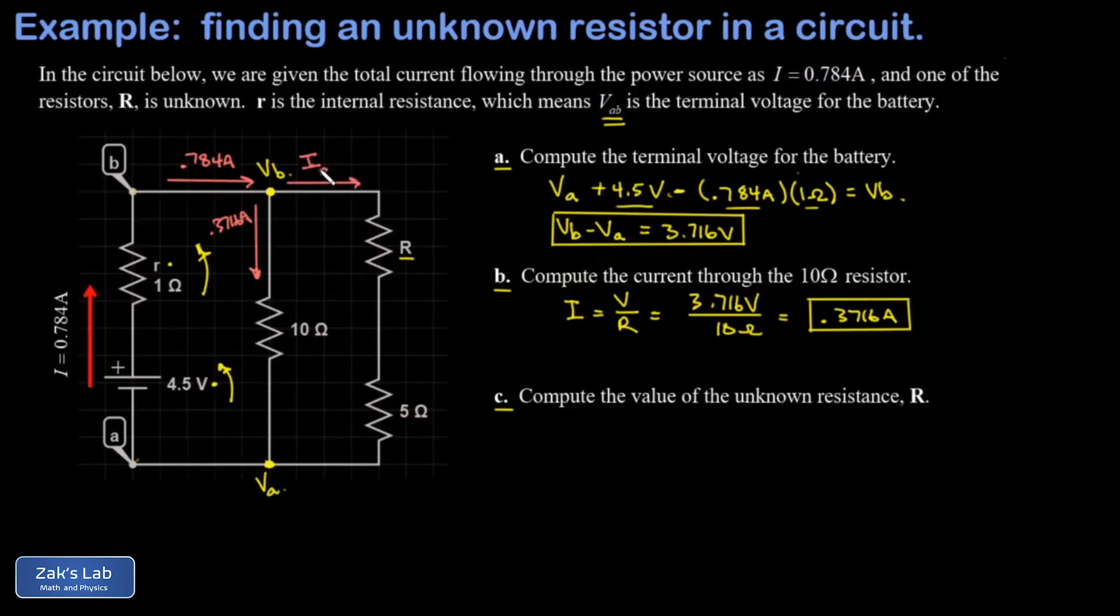I'll just call that IR. So IR is just the total amount of current minus the amount that went down the center branch. And this gives me 0.4124 amps flowing down that right branch.